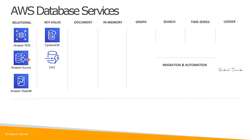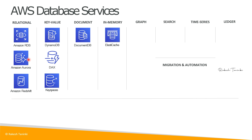DAX is the advanced version of DynamoDB. DynamoDB may respond in about 1 second, while DAX retrieves in 1/10th of a second. If we have low latency requirements, we enable DAX with DynamoDB. Next is Keyspaces. In the document category, we have DocumentDB — essentially MongoDB replicated in AWS under the DocumentDB name. In the in-memory category, we have ElastiCache.